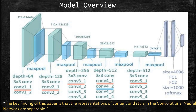The key finding of this paper is that representations of content and style in convolutional neural networks are separable — we can actually separate content and style within convolutional neural networks.